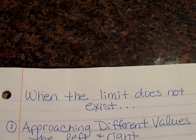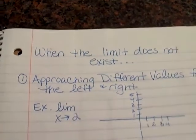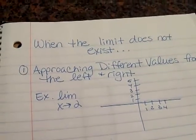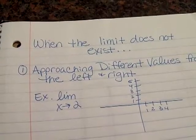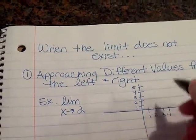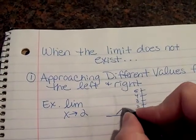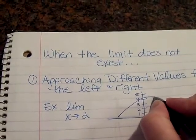Here's when the limit may not exist: when you are approaching different values from the left and the right. Here's an example. As we approach 2 on the x-axis from the left and the right, if we approach from the left to 2, we're ending up here at 4.